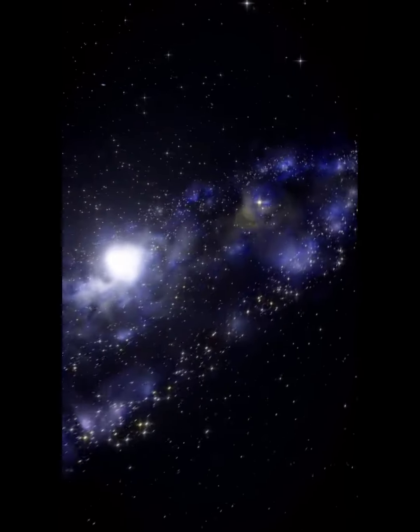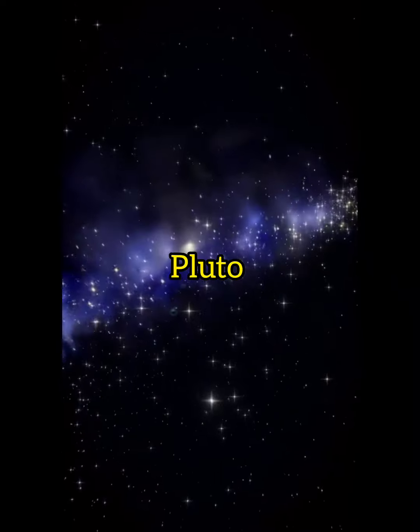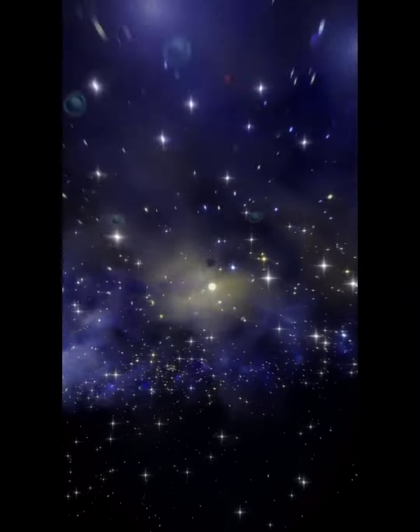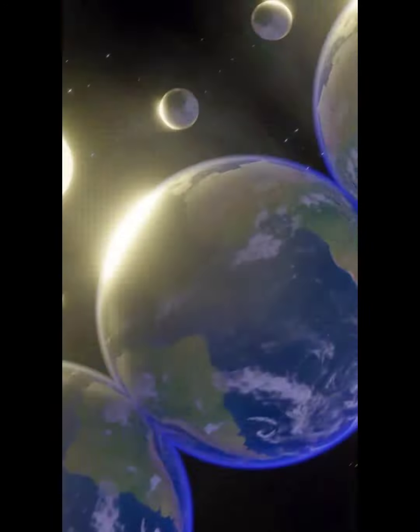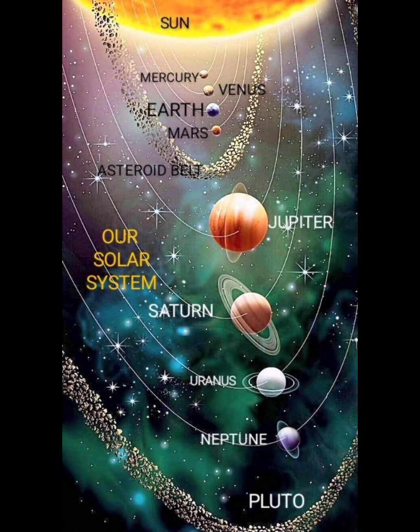Scientists used to call Pluto the ninth planet. But in 2006, scientists decided that several objects in the solar system, including Pluto, should be called dwarf planets.